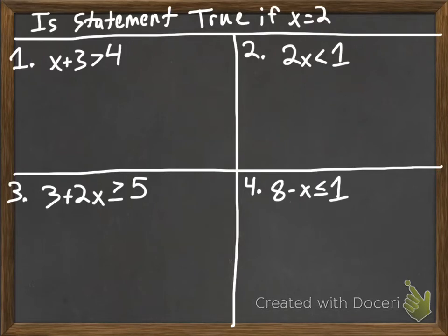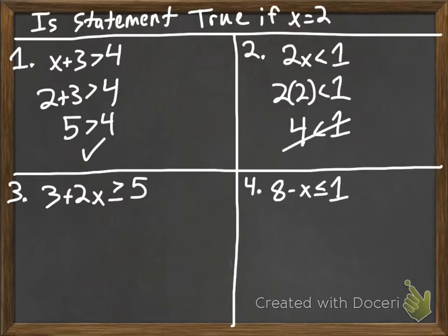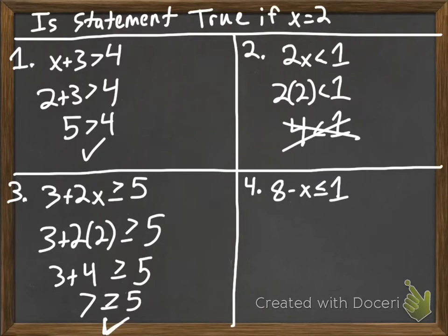Number one: we sub in 2 for x — 2 plus 3 is greater than 4, giving us 5 is greater than 4, so it is true. The second one: 2 times 2 is less than 1 gives us 4 is less than 1, which is not true. The third one: 3 plus 4 is greater than or equal to 5 — 7 is greater than or equal to 5, so this is true. The last one: 8 minus 2 is less than or equal to 1 — 6 is less than or equal to 1, which is not true.